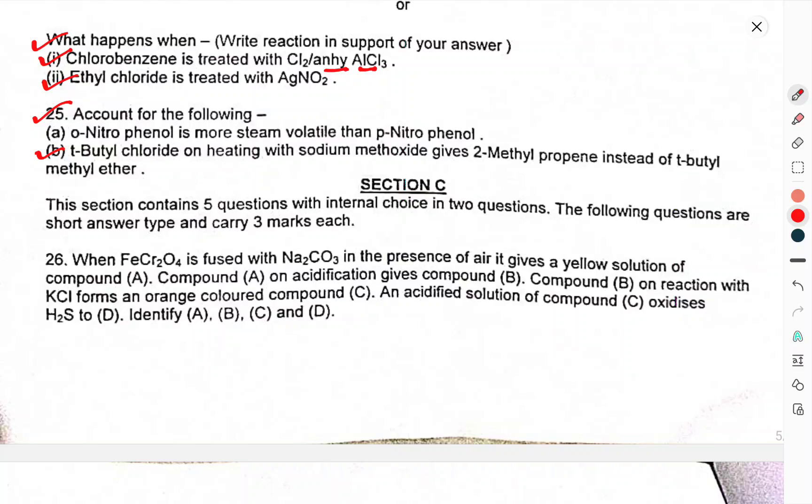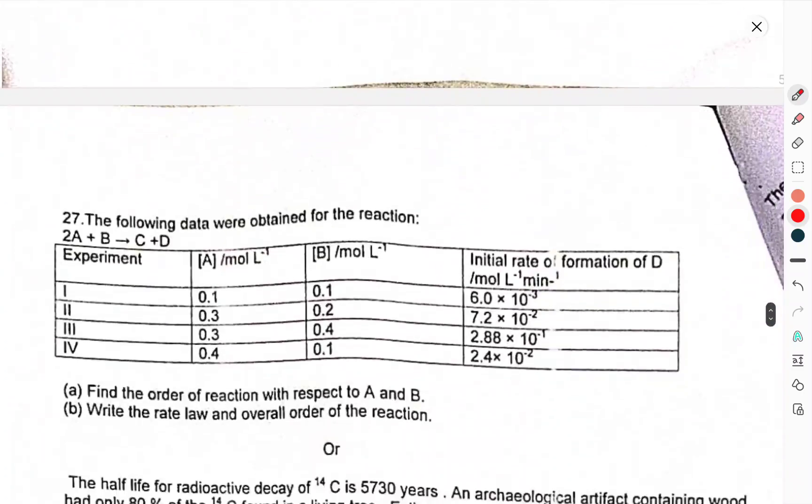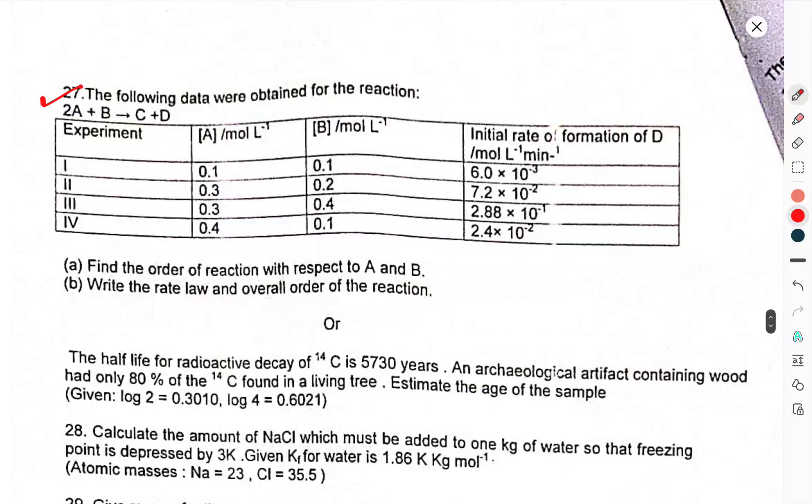Question 25: Account for the following - o-nitrophenol is more steam volatile than p-nitrophenol. t-butyl chloride on heating with sodium methoxide gives 2-methylpropene instead of t-butylmethyl ether. Question 26: FeCr2O4 is fused with Na2CO3 in presence of air, gives compound A. Compound A on acidification gives compound B. Compound B on reaction with KCl gives orange colored compound C. Acidified solution of compound C oxidizes SO2 to D. Identify A, B, C, D. Question 27: For the following data obtained for a reaction, find the order of reaction with respect to A and B. Write the rate law and overall order of the reaction.